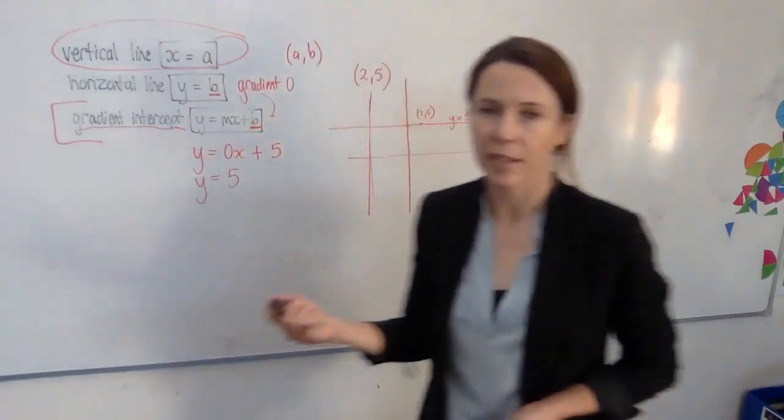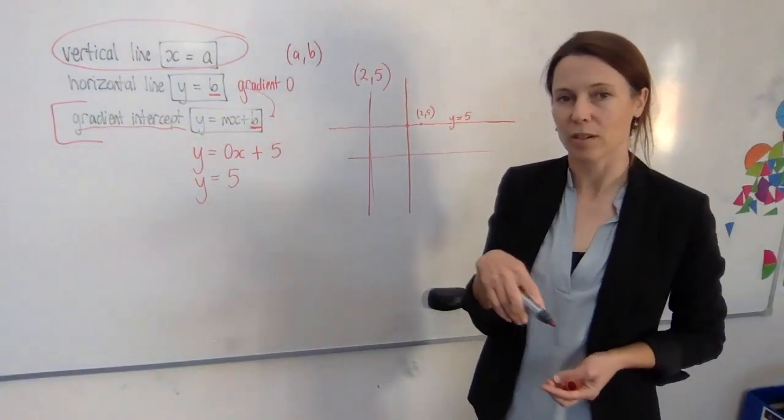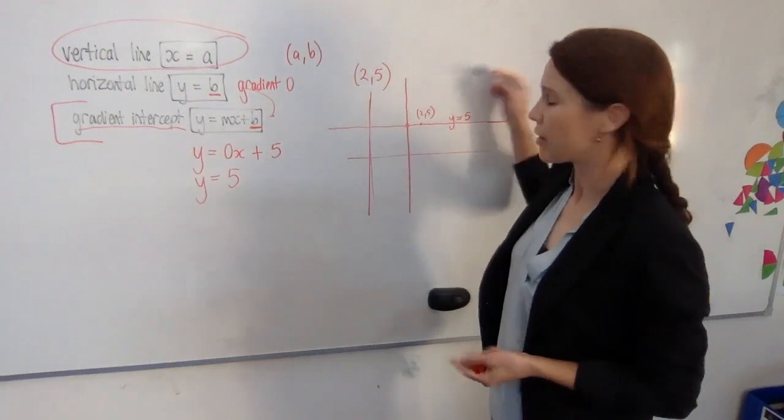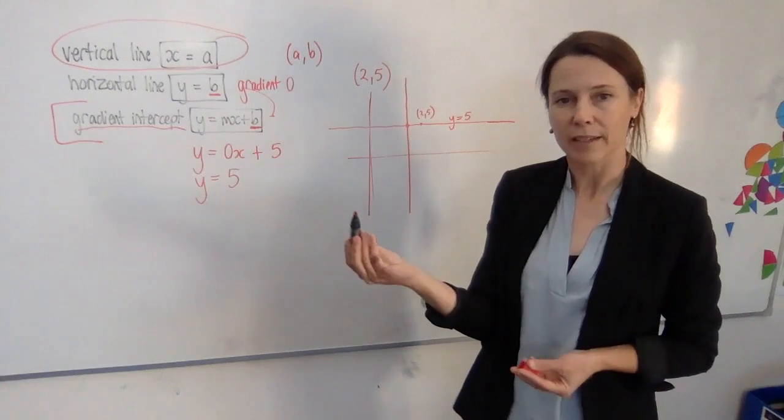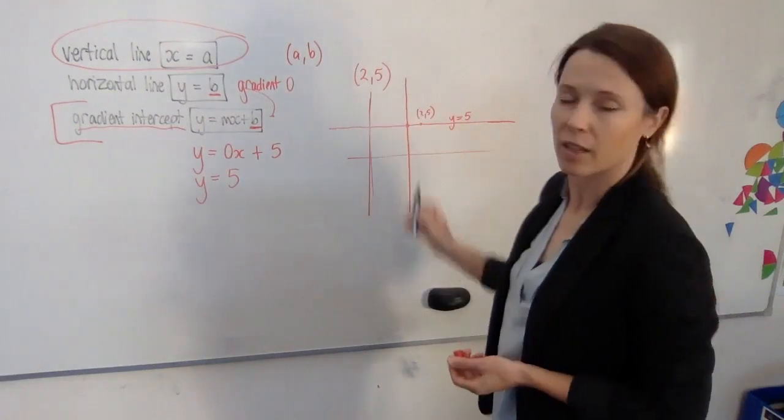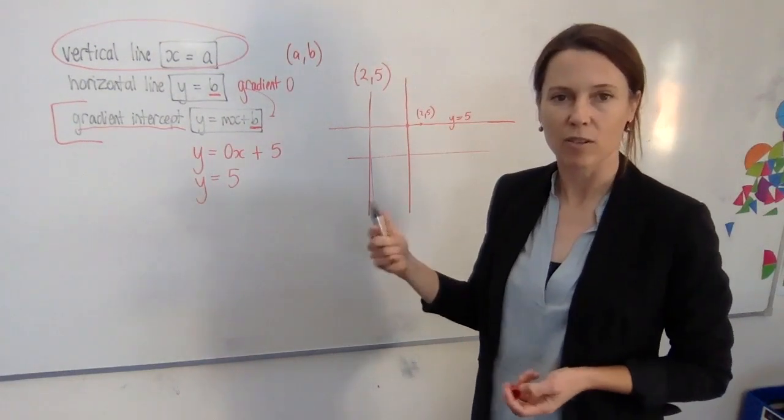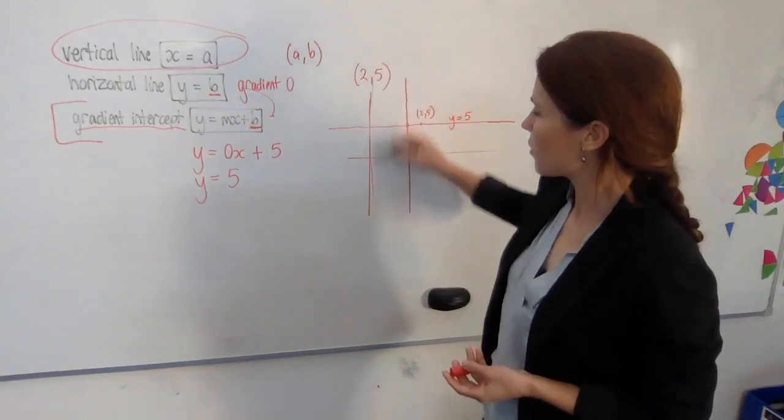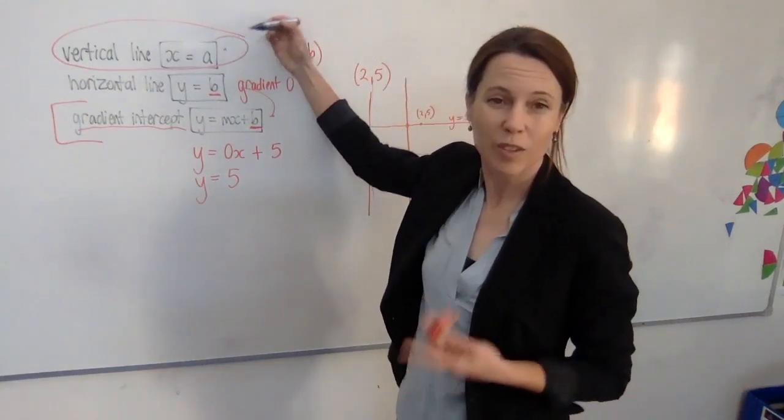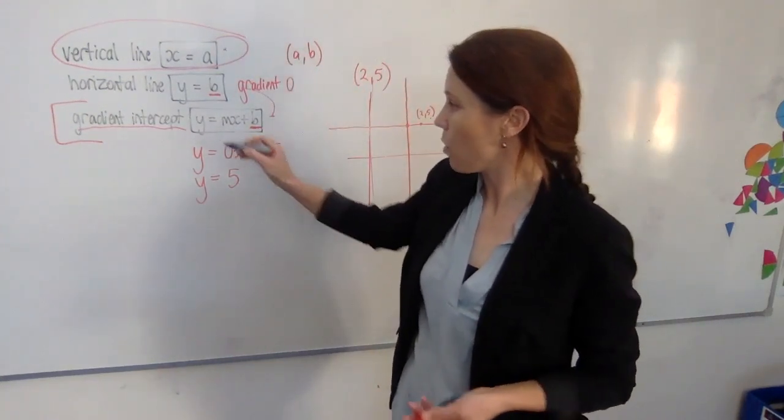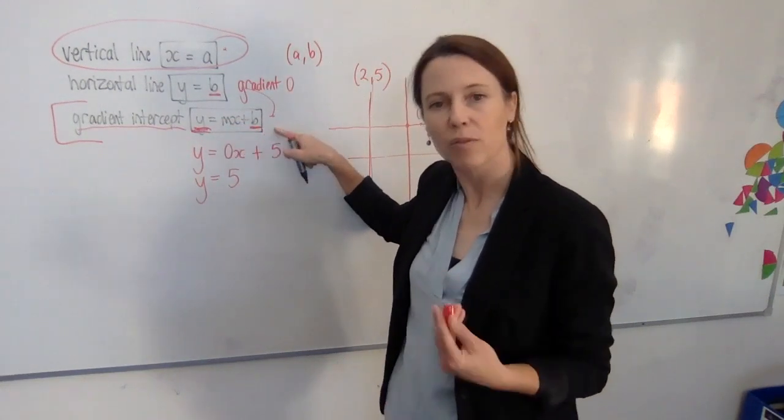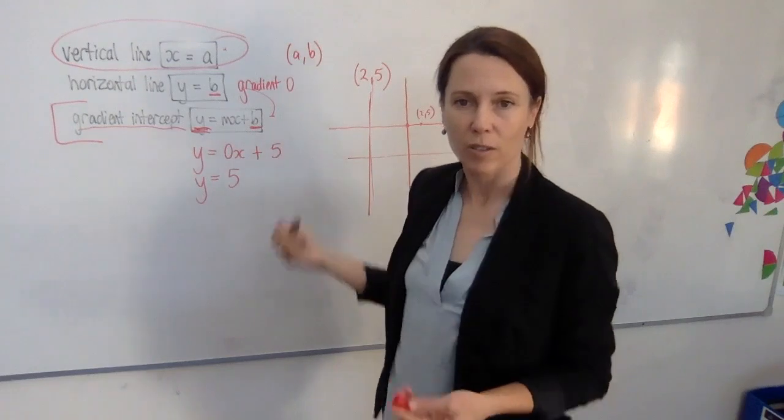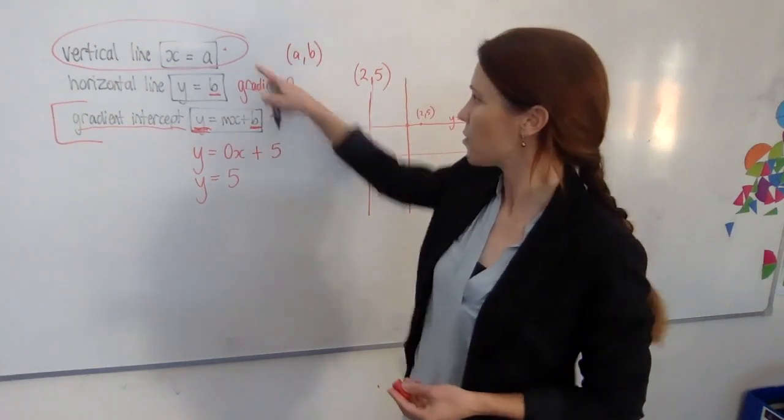And this also makes sense if you think back to our functions unit, where we gave various graphed lines and curves and things a vertical line test, didn't we? And we said if the vertical line cuts them more than once, then they're not actually functions. So this vertical line is not actually a function, which sort of makes it make sense then of why it can't fit into this nice, neat formula, because this formula applies to functions, which are actually straight lines. And this one's not a function.